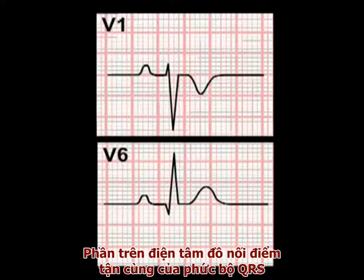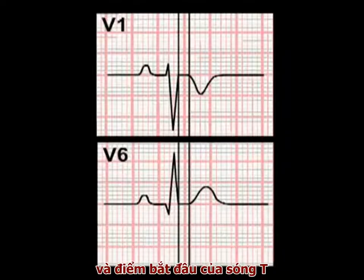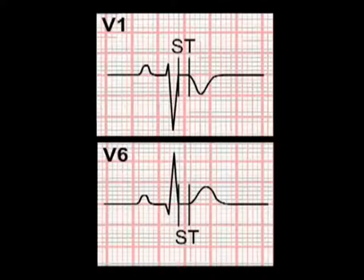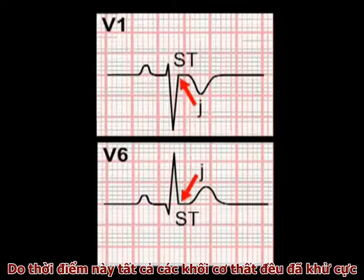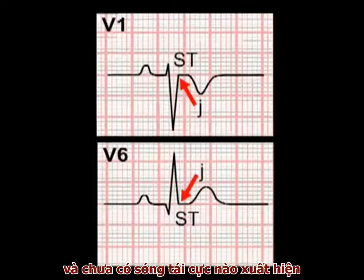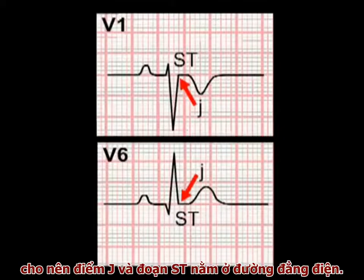The section of the ECG recording connecting the end of the QRS complex and the beginning of the T-wave is termed the S-T segment. The junction between the S-T segment and the end of the QRS complex is termed the J-point. As all of the ventricular muscle mass is depolarised at this time, there is no flow of current through the heart, and the J-point and the S-T segment should therefore lie on the isoelectric line.